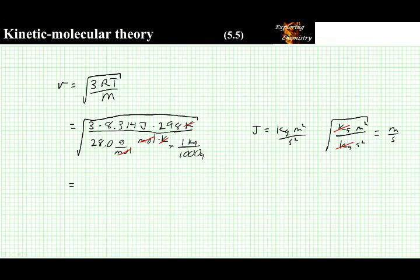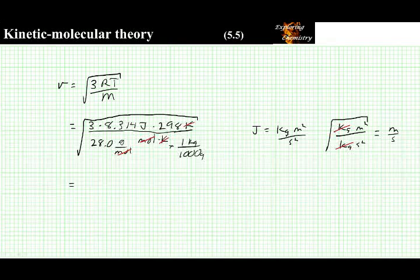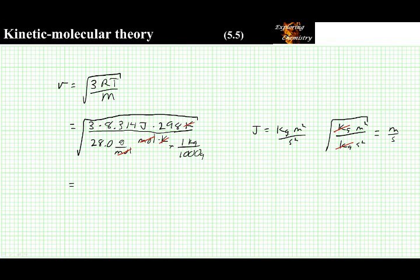Plugging the numbers into a calculator, we find that the velocity of nitrogen is 515 meters per second. And that is the RMS velocity.